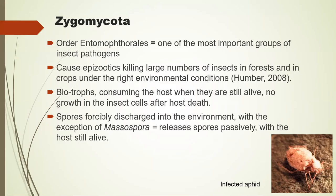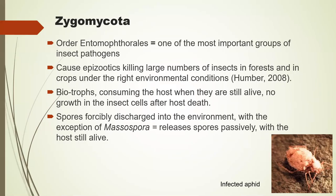There are some really interesting stories in this group. In addition to Massospora, other groups like Strongwellsia, which infects Delia (cabbage flies), and certain species of Entomophaga, Erynia, and Entomophora, produce spores before the host's death — while still alive. We're finding more and more that they can alter the behavior of insects, and it's only in recent times that people are starting to get a handle on how they're doing this.